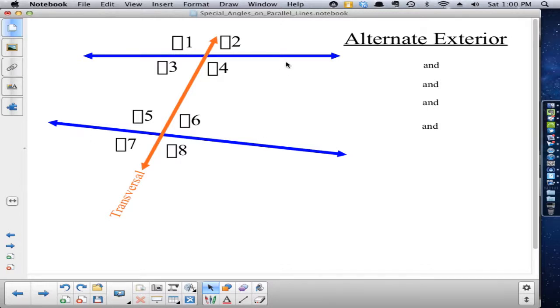So exterior angles would be one, two, seven, and eight. Those angles are exterior.